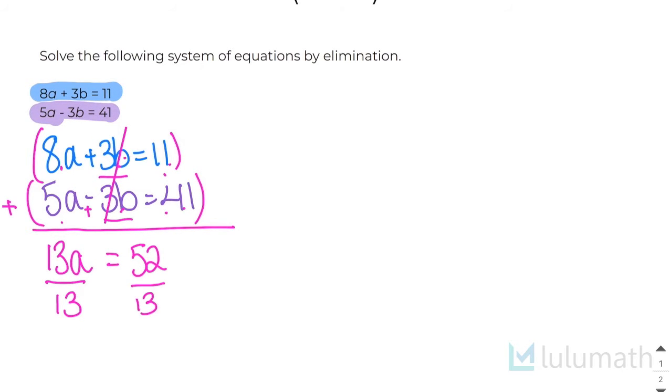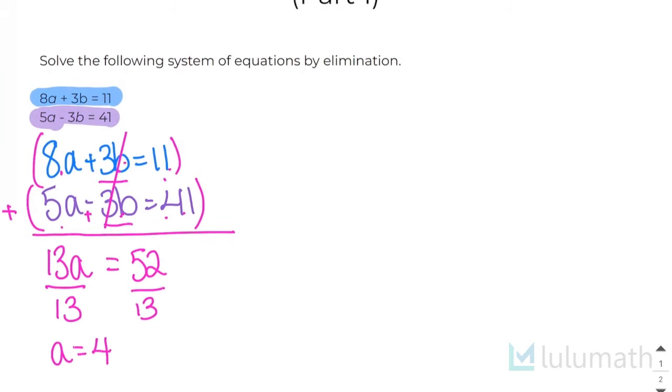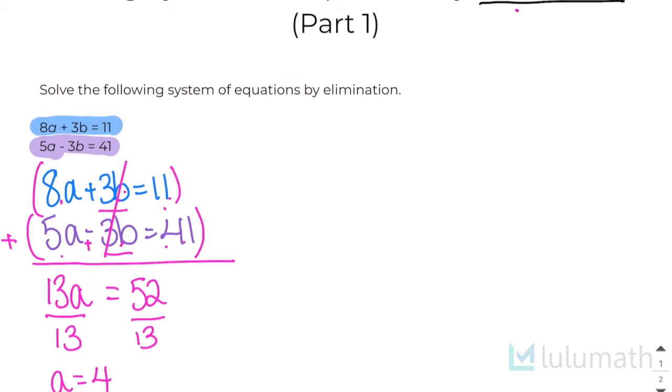Now I've gotten to a point where I only have one variable. So it's easy to solve. I just divide both sides by 13 and I end up getting a equals 4. Now that I've done that, the elimination piece is over. I've solved for one of my variables.